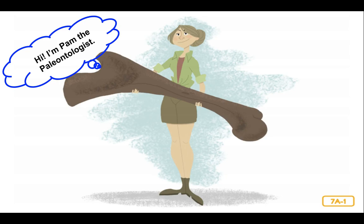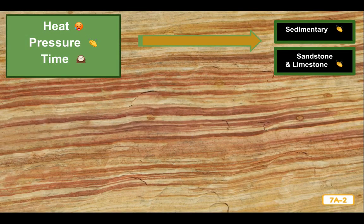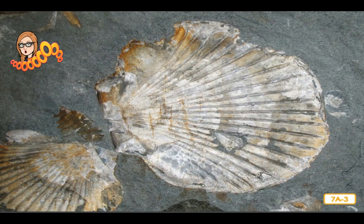Paleontologists study bones to learn about life on earth long ago — and this isn't just any bone, it's a dinosaur bone. I'll be teaching you about dinosaurs in the near future. You already know about basic geologic factors: heat, pressure, and time. Sedimentary rocks such as sandstone and limestone are formed from layers of sediments pressed together over time. Sediments can be tiny pieces of dirt and rock, or even decayed plants and animals. These layers offer many clues about the history of life on earth — my specialty as a paleontologist.